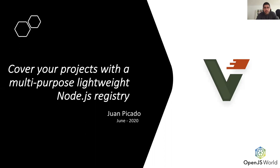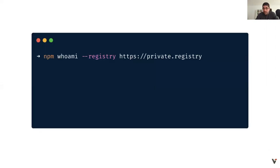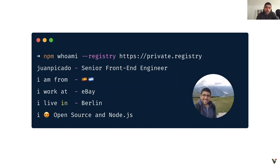Hi, thanks for joining my talk. I'm really glad to meet you virtually. My name is Juan, I'm from Spain but with strong roots from Nicaragua. I'm a senior front-end engineer at eBay and I've lived in Berlin for about a year, previously in Austria for a few years. I'm the lead maintainer of the Verdaccio project and I really love open source, especially Node.js.